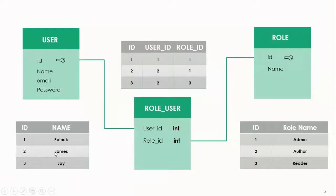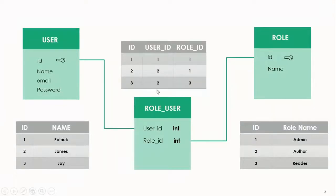Then we have another user called James, who is ID two. On the pivot table, his user ID is two and his role is one — so if you check from the roles table, role one is admin. That means we have two users who have the same role. We also have another user called Joy, who is not on this pivot table. And we can see that James, with ID two, has another role called Reader, which is ID three. So that means one user can have more than one role.